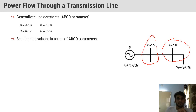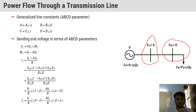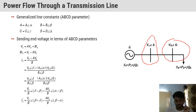This is the generalized ABCD constant for power flow through the transmission line, where A is equal to A at an angle alpha, B at an angle beta, C at an angle gamma, and D at an angle delta. The sending end voltage in terms of ABCD parameters can be written as VS equal to ABR plus BIR. If we take BIR to the other side, we get VS minus ABR, and by using this we can calculate the value of IR. Putting all the values of ABCD, we get the result.